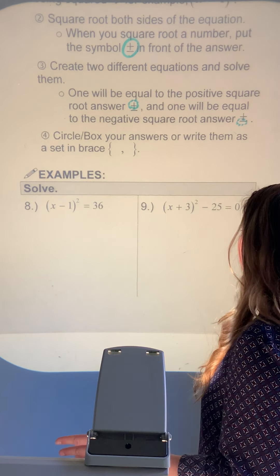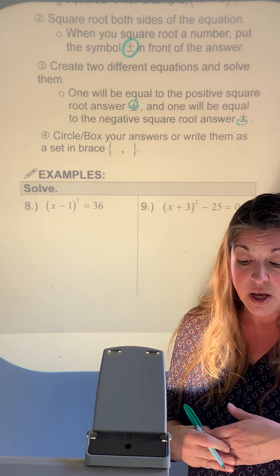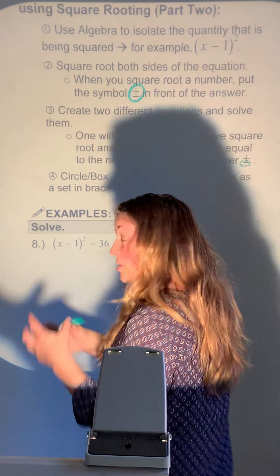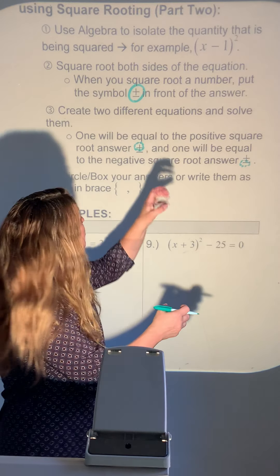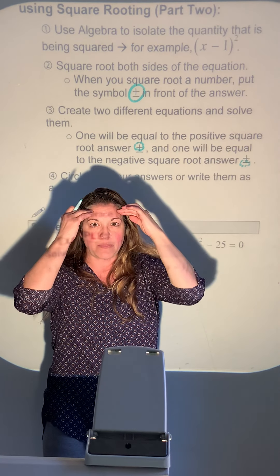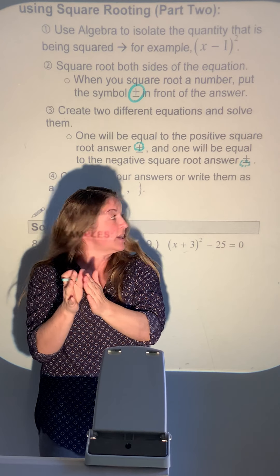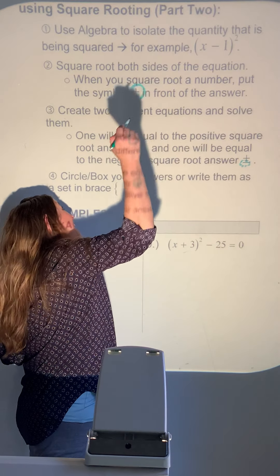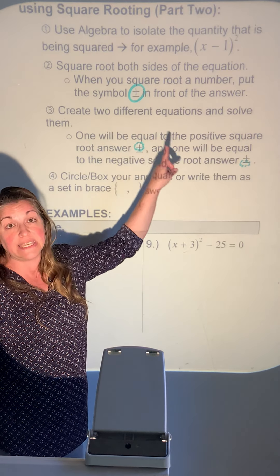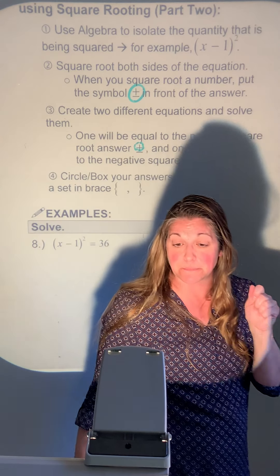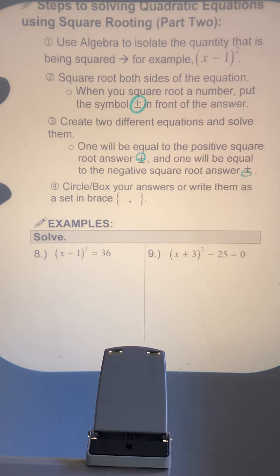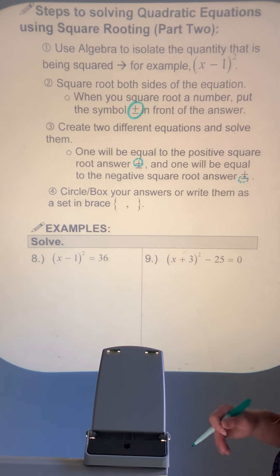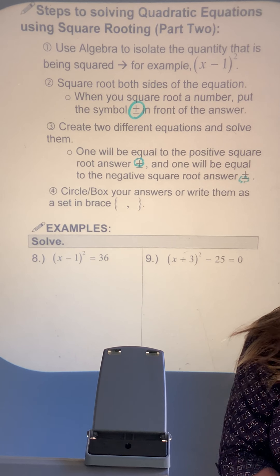What's happening is that now we have parentheses — the P of PEMDAS — to deal with. We undo addition and subtraction, then division and multiplication, then the exponent, and finally we can break into the parentheses. Make sure to get these steps written down; pause the video if you need to.